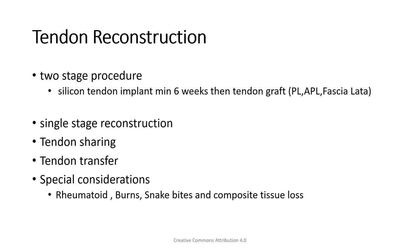Tendons can be repaired. If they are unable to be repaired, then you reconstruct them. When you reconstruct them, it's either using a graft to bridge a gap that is not possible to repair primarily, or we can do tendon transfer or tendon sharing. You can reconstruct them as a single stage or two stage. Generally in extensor tendon we use single stage, and there are various grafts we use commonly.